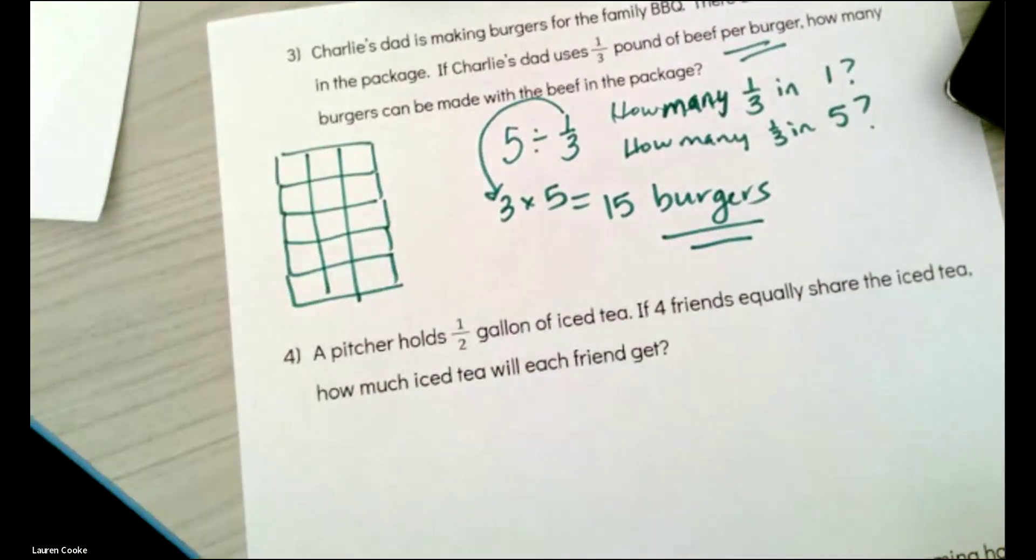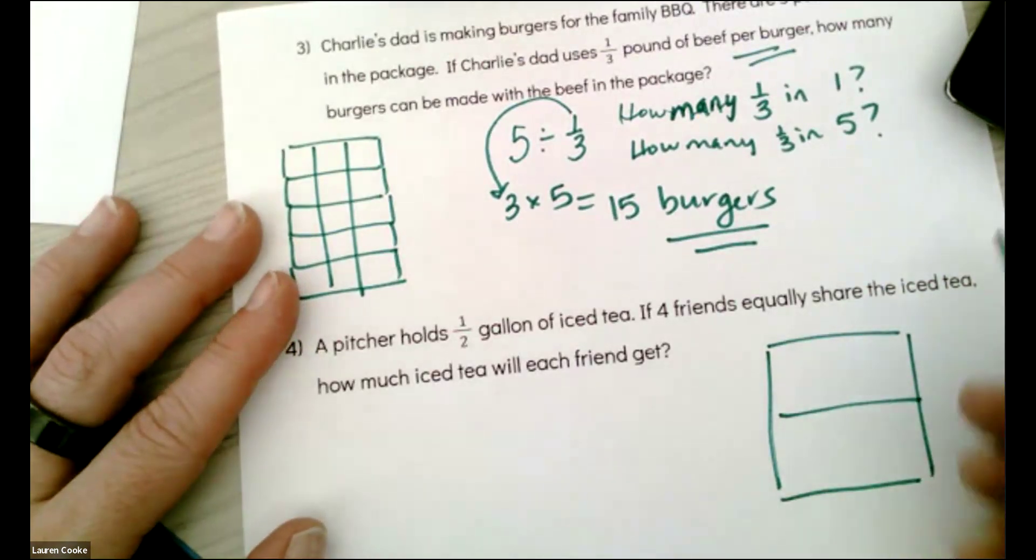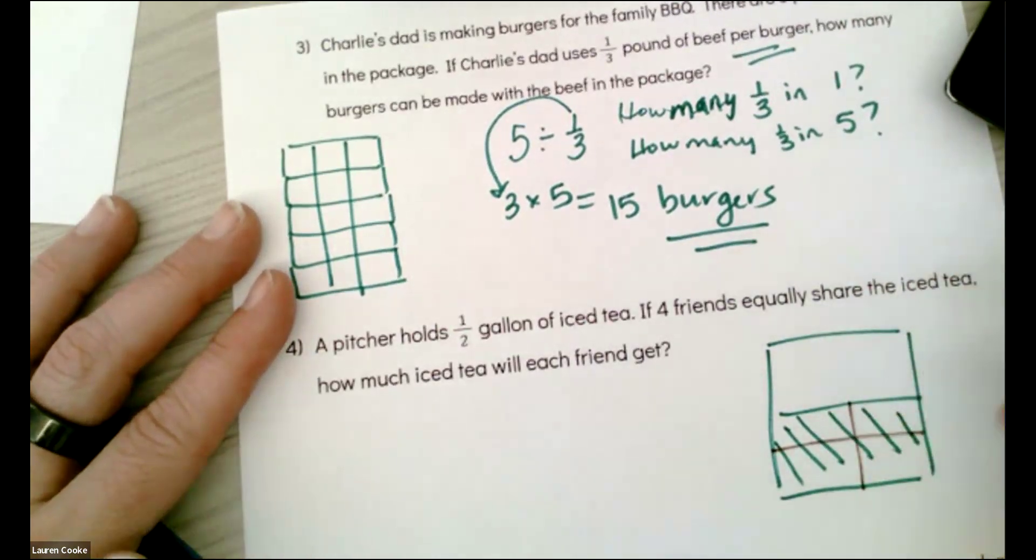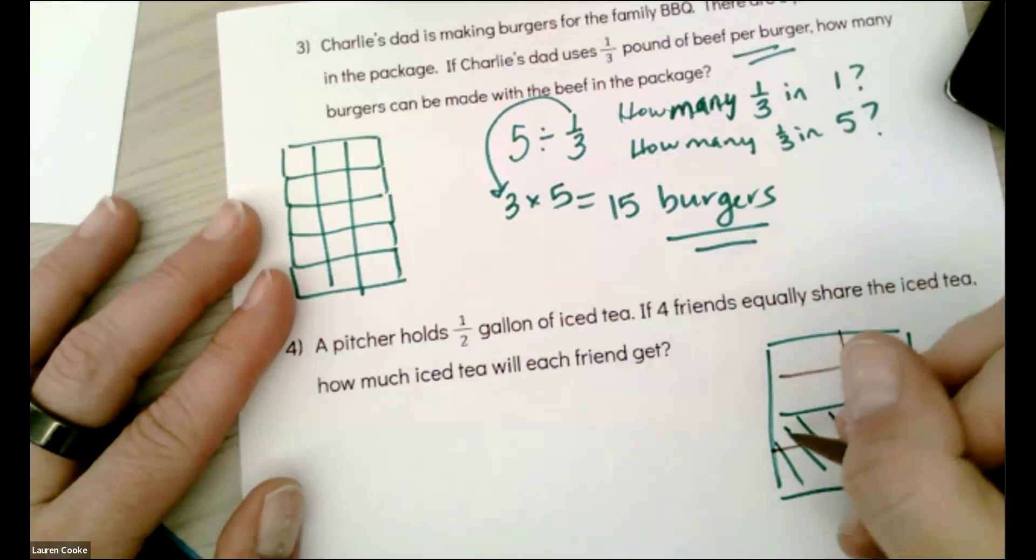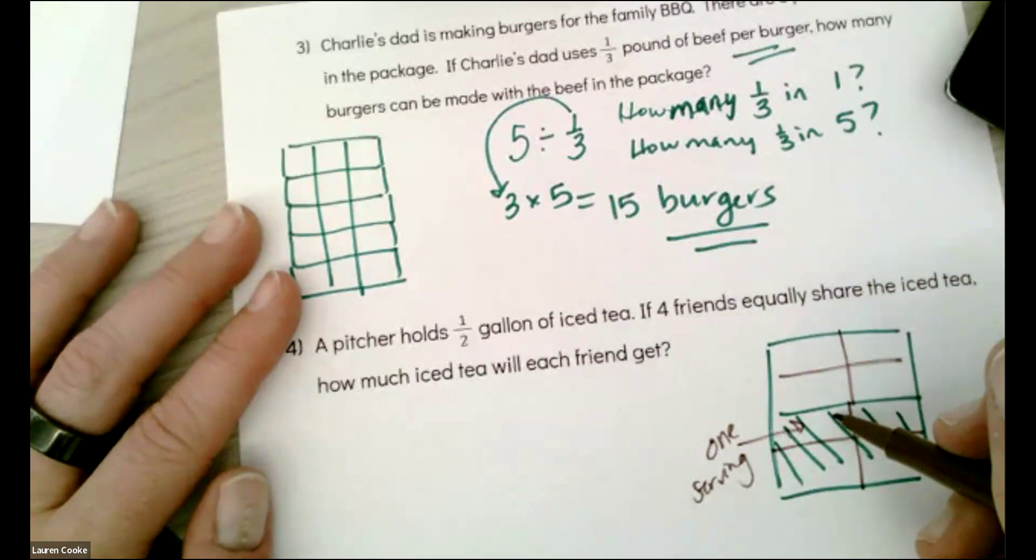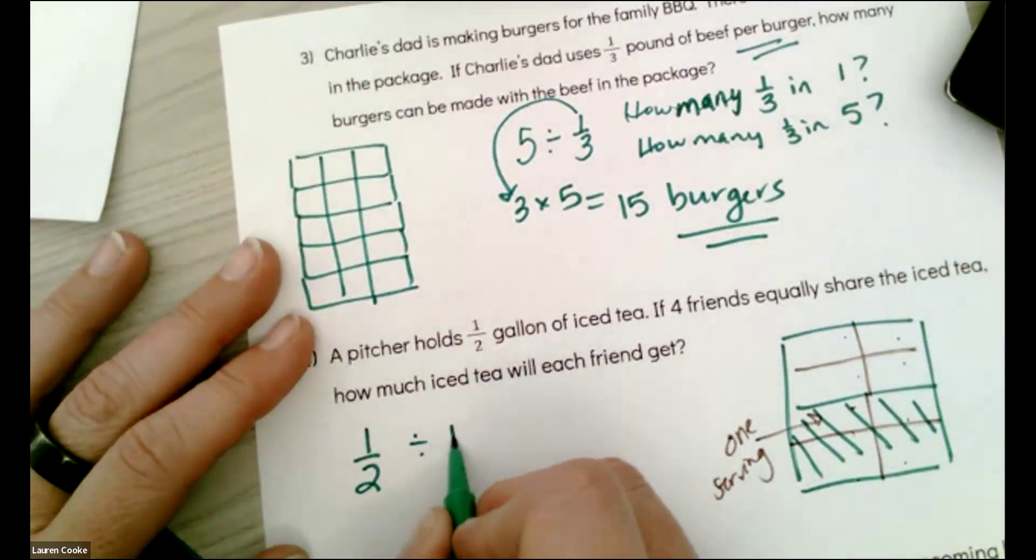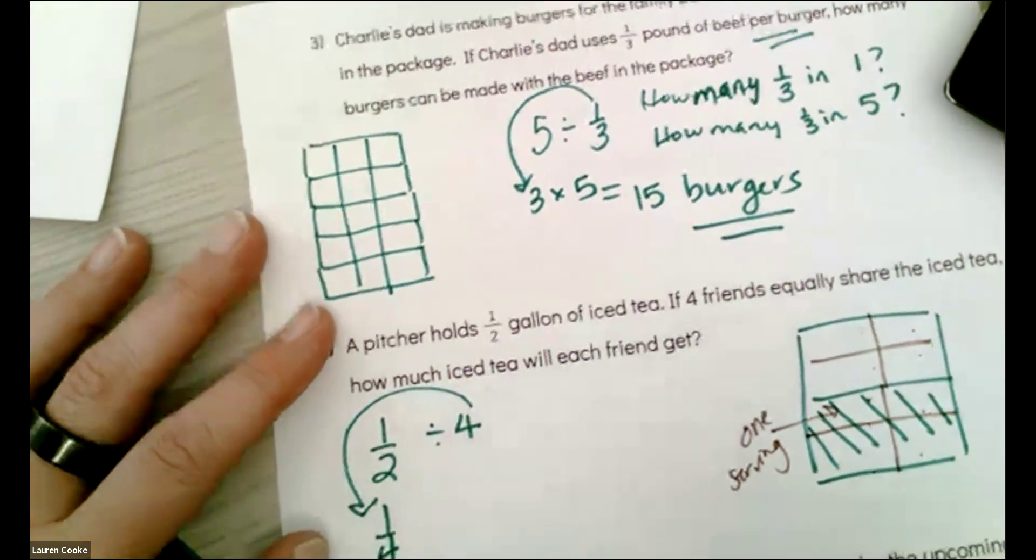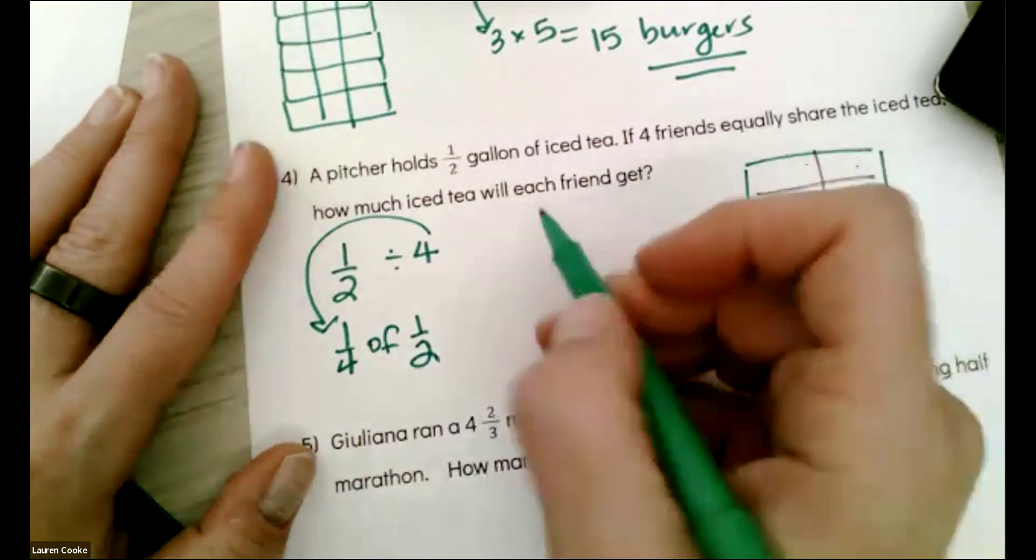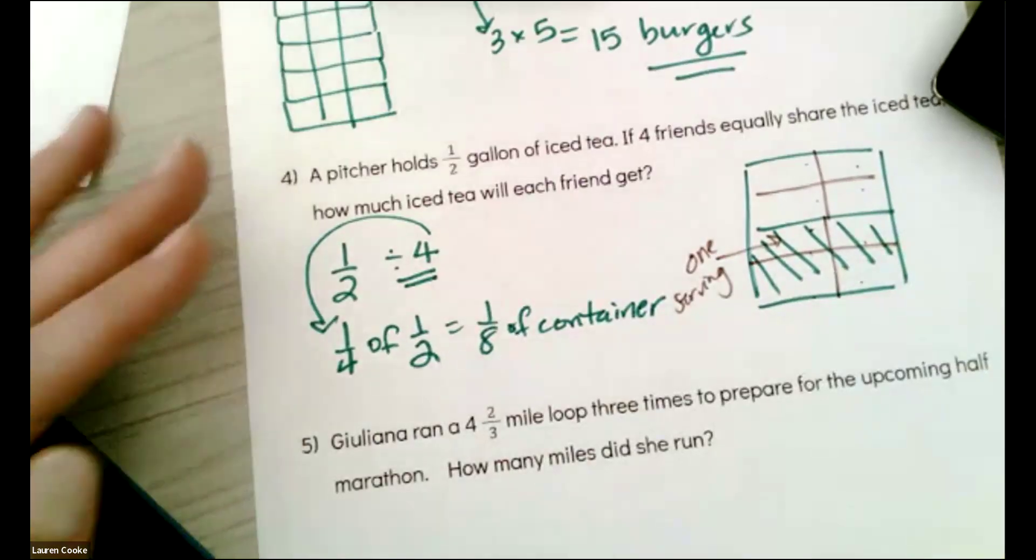A pitcher holds half a gallon of iced tea. If four friends equally share the iced tea, how much iced tea will each friend get? Here's my pitcher. It's holding a half. And then there are four friends equally sharing the iced tea. So that friend, one friend, one serving is going to be one out of, let's see how many, one, two, three, four, five, six, seven, eight. It's going to be one eighth. So it's one half divided by four. I'm going to get one fourth. Excuse me. I'm going to get one fourth of the one half that's there because I'm dividing by four. And so that's one eighth of the container. Word problem has a word answer.